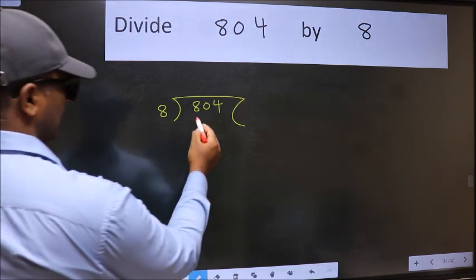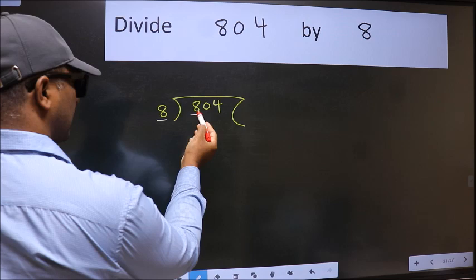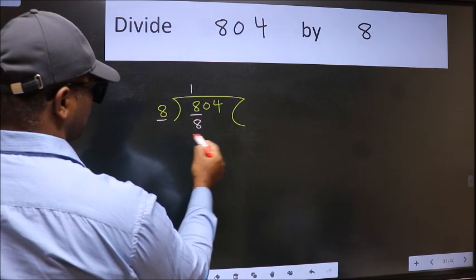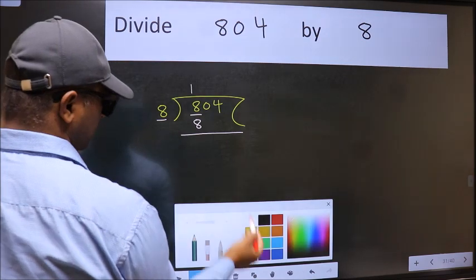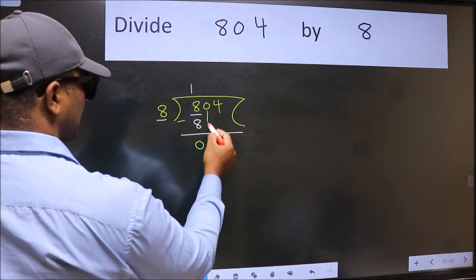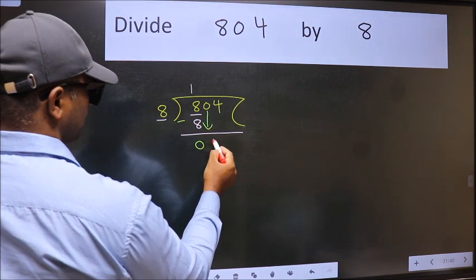Here we have 8 and here 8. When do we get 8 in the 8 table? 8 once is 8. Now we should subtract. We get 0. After this, bring down the next number, so 0 down.